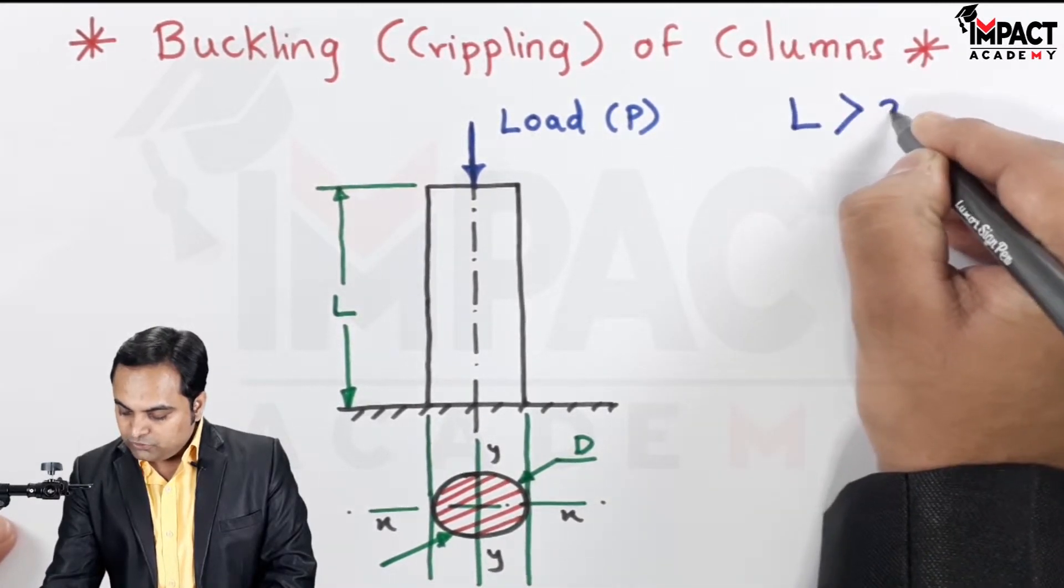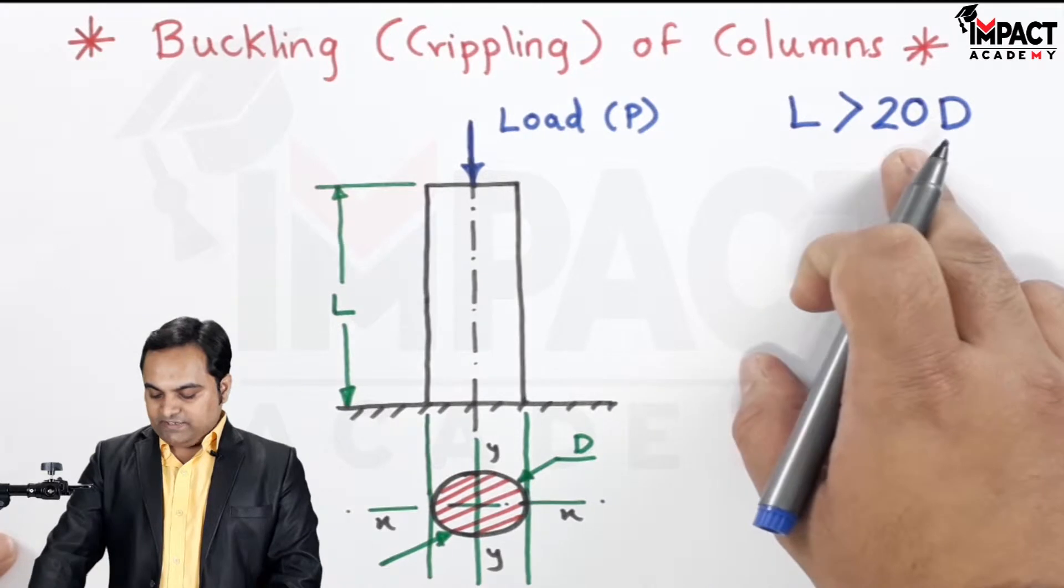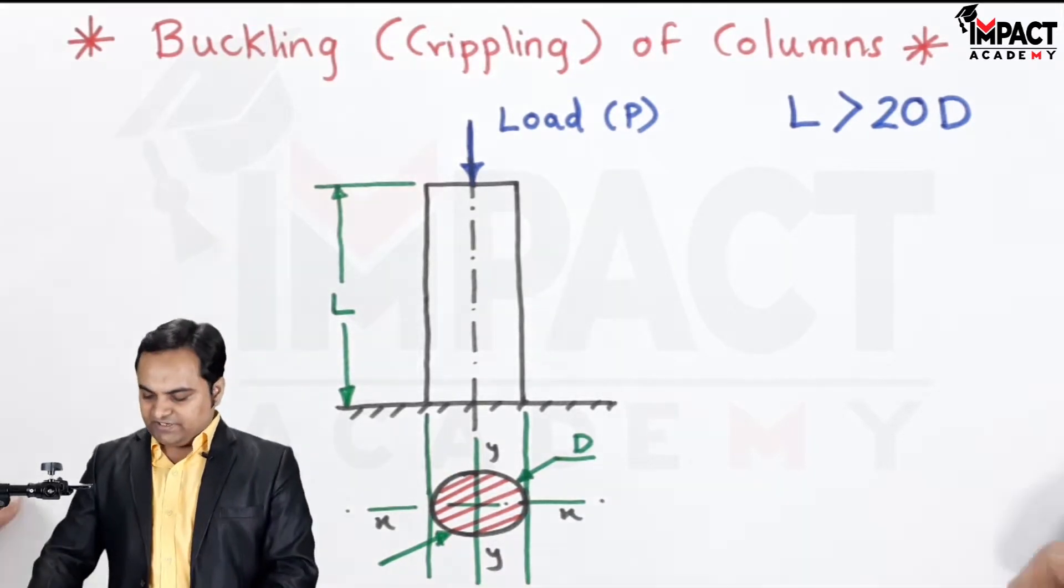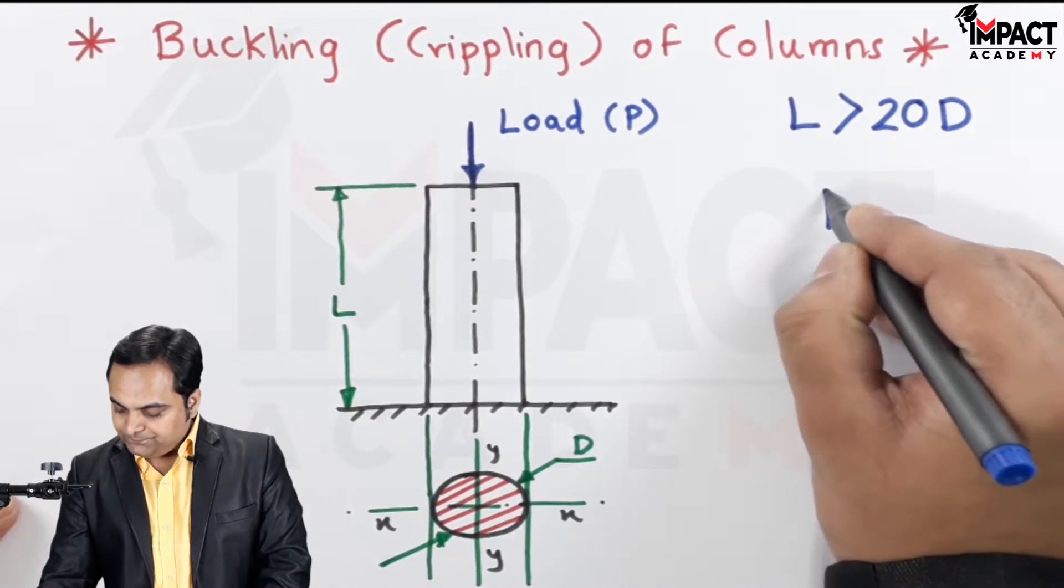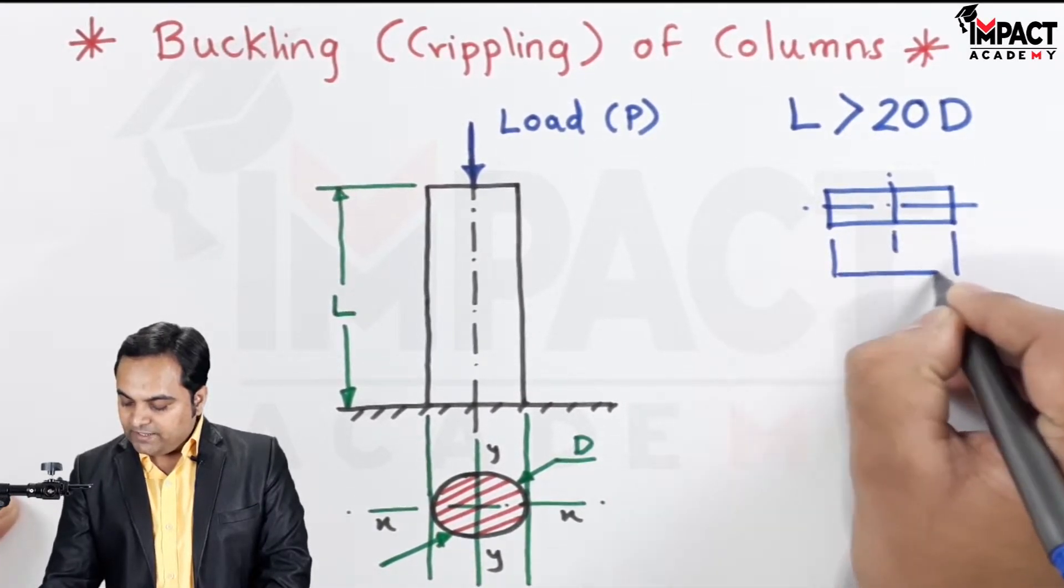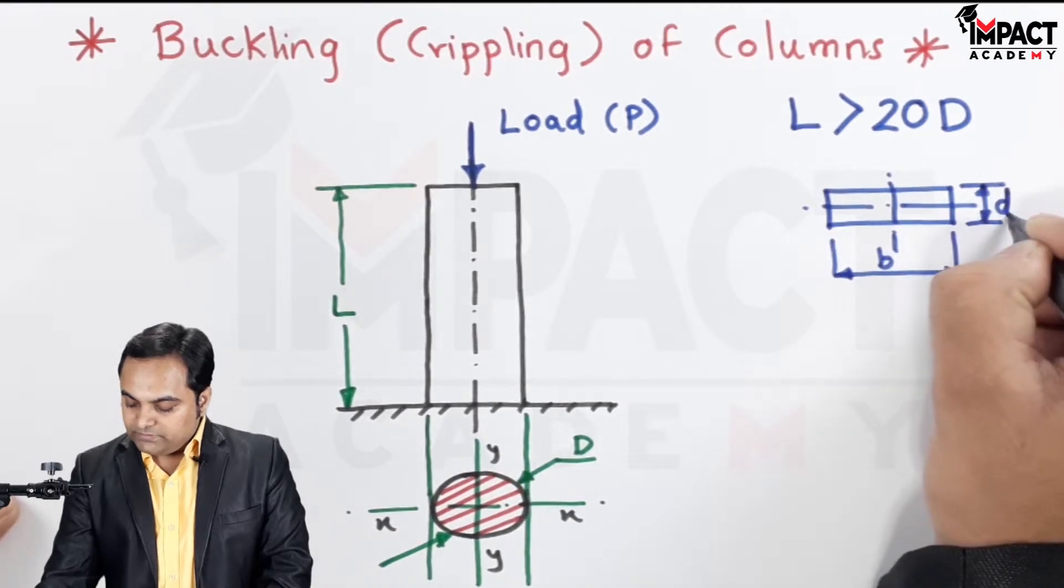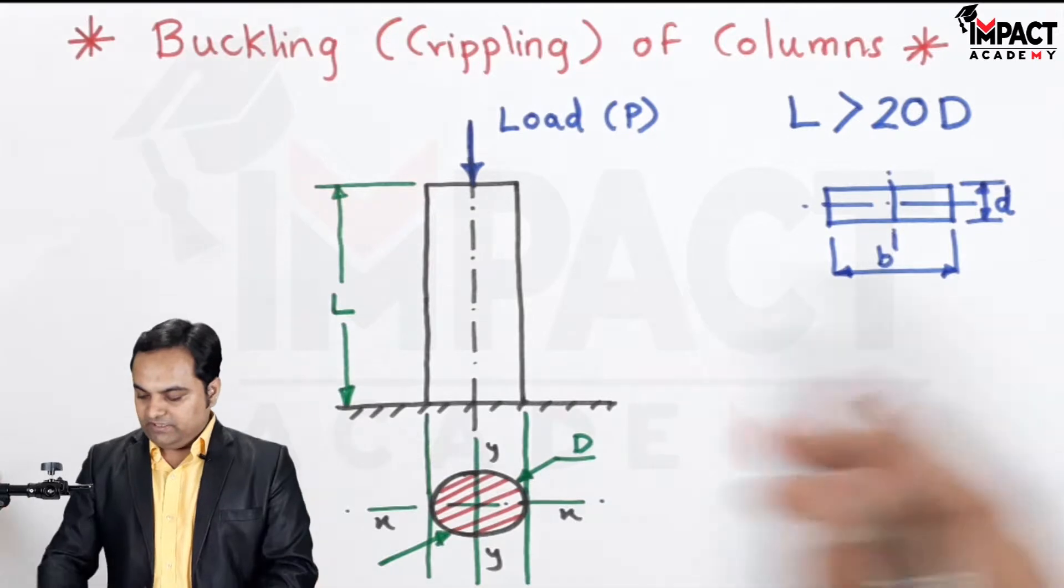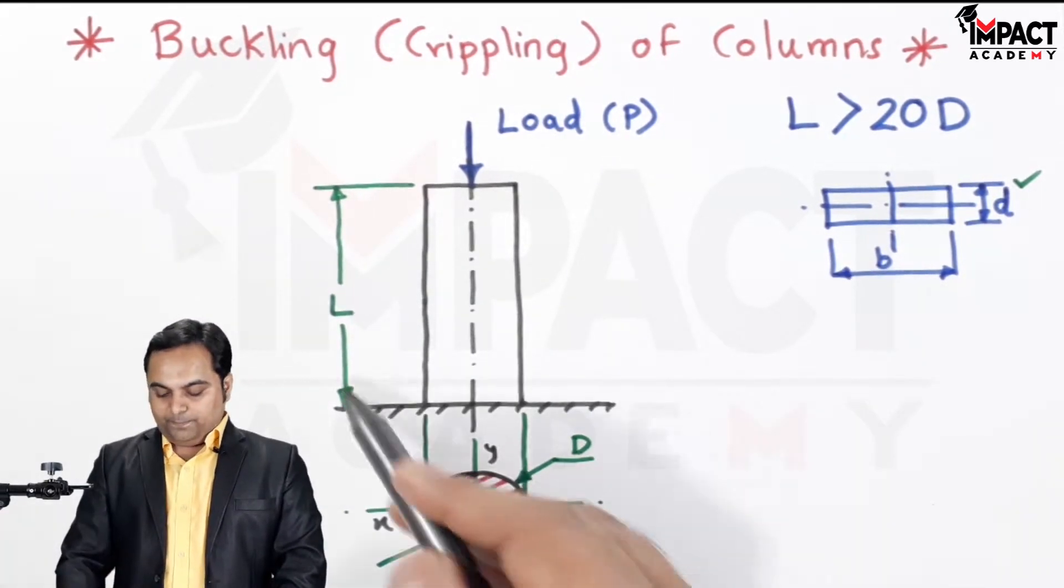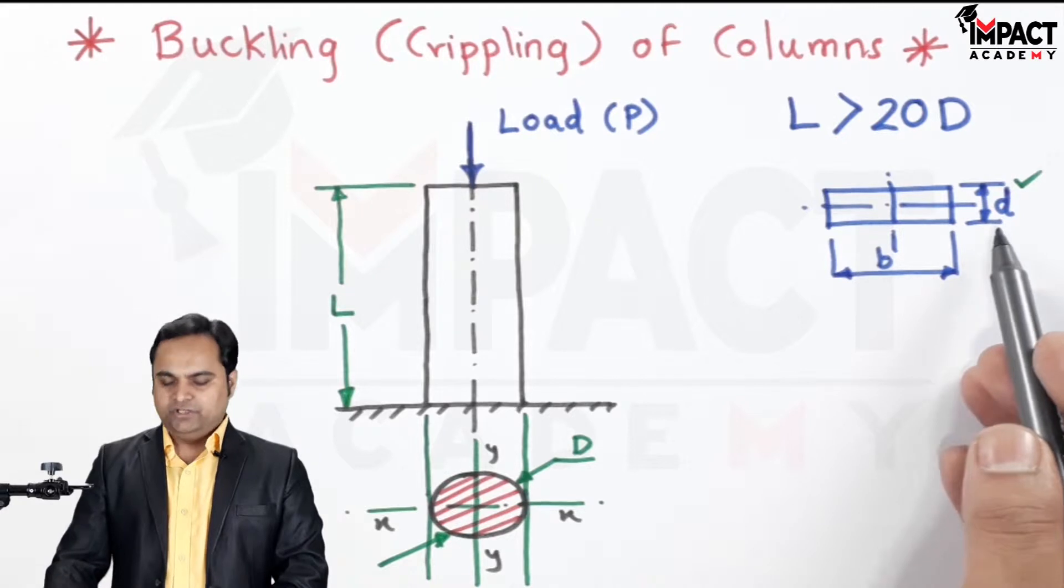In this case, the condition is if the length of the column is greater than 20 times the diameter of the column, or we can say if it is not a circular column, we take the least lateral dimension. Like for example, if it is a rectangular column having width B and depth D, then out of B and D, small d is the least lateral dimension. So in that case, it would be 20 times this small d which would be compared with the length of the column, and if the length is greater than 20 times that least lateral dimension, then it would be called as a long column.